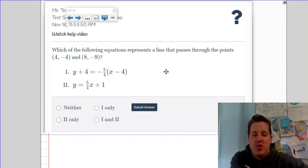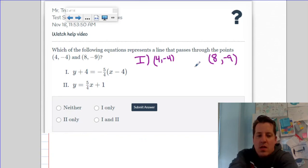So let's show what that looks like just for line 1. The question is, do these two points, (4, -4) and (8, -9), work for equation 1? Let's plug in (4, -4) and see how that works.